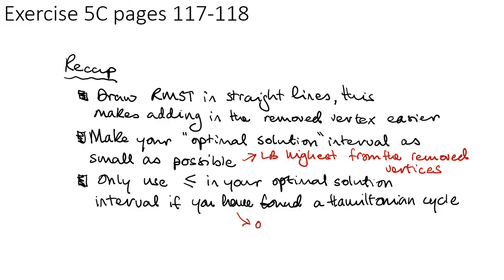Only use the greater than or equal to symbol in the optimal solution interval if you have found a Hamiltonian cycle. Otherwise, just use the greater than symbol.